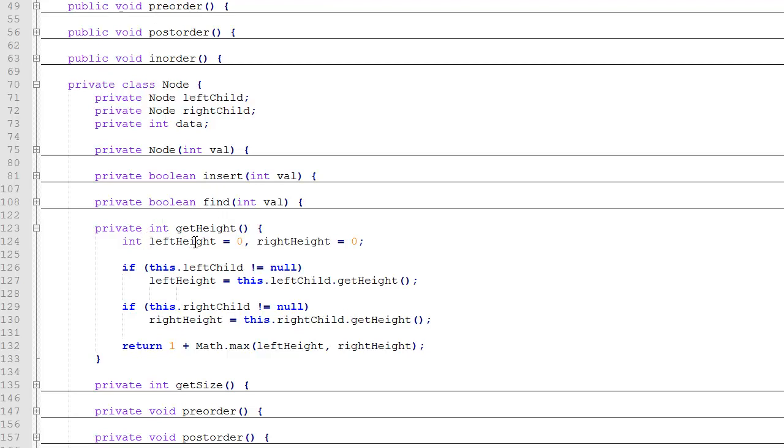So we're going to set leftHeight and rightHeight both equal to zero. Then if there's a left child we're going to set leftHeight equal to the height of the left child with a recursive function call. And we're going to check if there's a right child and if there is we're going to get the height of the right child with a recursive function call and set that to the right height. And then we return one plus the max of left height and right height.